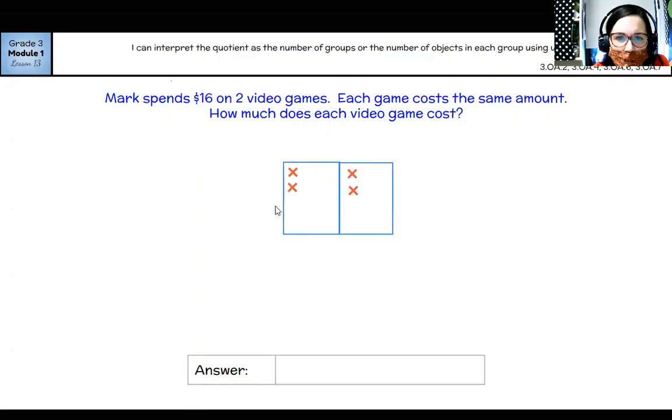One, two, three, four, five, six, seven, eight, nine, 10, 11, 12, 13, 14, 15, 16. So each game costs one, two, three, four, five, six, seven, $8. I double check this. Yes, that's also eight. So that would mean that 16 divided by two equals eight.